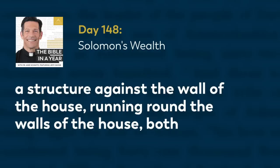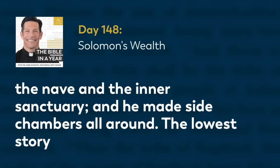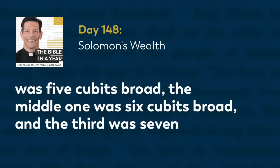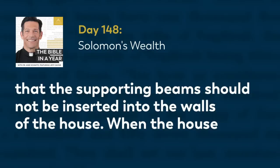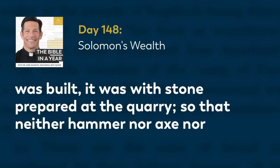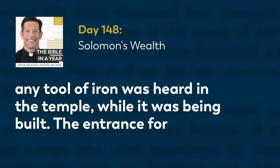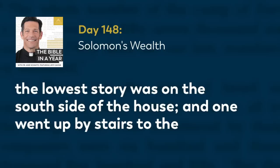He made for the house windows with recessed frames. He also built a structure against the wall of the house, running around the walls of the house, both the nave and the inner sanctuary, and he made side chambers all around. The lowest story was 5 cubits broad, the middle one was 6 cubits broad, and the third was 7 cubits broad. For around the outside of the house, he made offsets on the wall so that the supporting beams should not be inserted into the walls of the house. When the house was built, it was with stone prepared at the quarry, so that neither hammer nor axe nor any tool of iron was heard in the temple while it was being built.